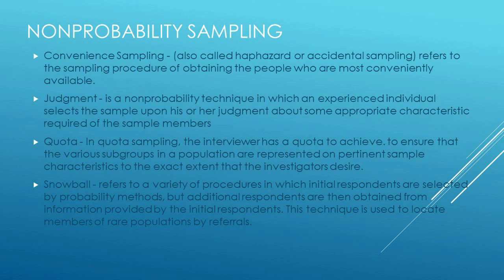The next type is a judgment sample, where professional judgment is used to pick people. For example, someone familiar with the town might say: 'There are people in that subdivision who'd be good to talk to, and another group heavily involved in the community who can tell you a lot.' A judgment sample uses someone familiar with the area or topic to select people they think can yield useful information. It's very much a non-probability approach and is open to bias, as what the sample says doesn't necessarily reflect the population.